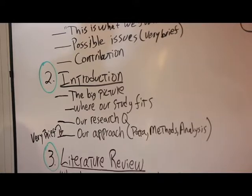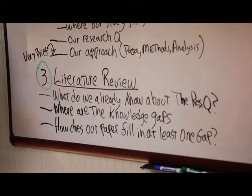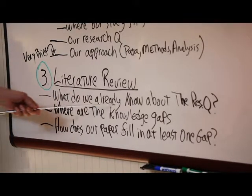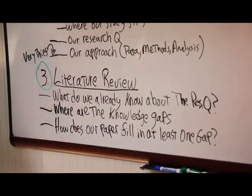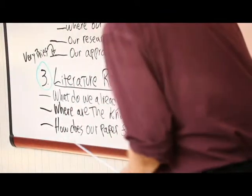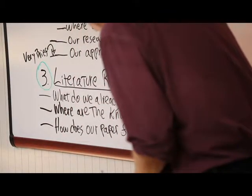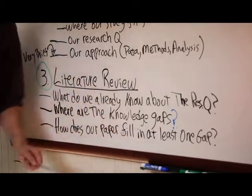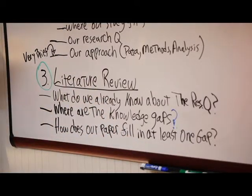Number three, moving onwards, the literature review. This is a short essayistic, no math type of section where you answer questions like: what do we already know about the research question? Where are the knowledge gaps? And how does our paper fill in at least one gap? This is a big justification for the paper itself. So you say what do we know, what do we not know, and how does our paper contribute to fixing the stuff that we don't know about. That's the literature review.